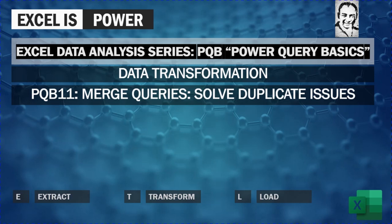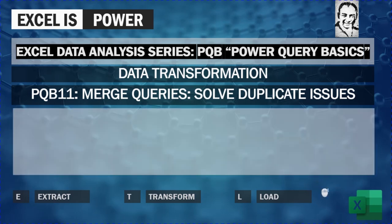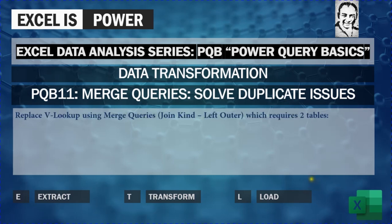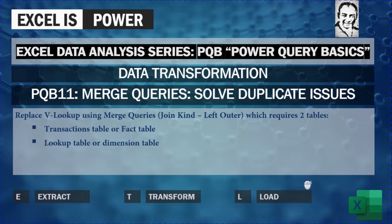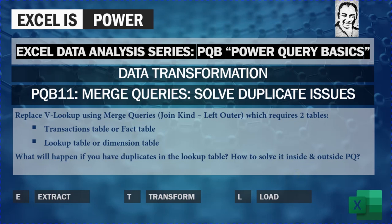Welcome to a new video from the Accelerator Analysis series, Power Query Basics. This is PQB 11, and we'll continue talking about merge queries. In this video we're going to see how we can solve the duplicate issue when we do merge queries. We already discussed that we can use merge queries to replace VLOOKUP using the left outer join kind, requiring a transaction (fact) table and a lookup table.